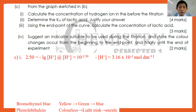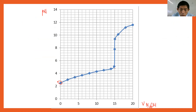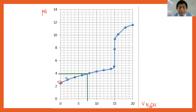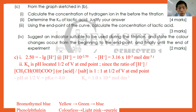Number two: determine the Ka of the lactic acid and justify your answer. Since this is the endpoint of the graph, you need to determine half of the endpoint. If your endpoint is 15 cm³, then half is 7.5 cm³. Align 7.5 on the x-axis with the titration curve to read off the pH. From the graph you should get pKa somewhere between 3.8 and 4, so pKa equals approximately 4. Values between 3.8 and 4 are all accepted. That is how you justify your answer.